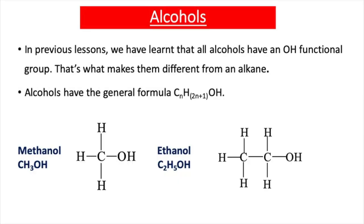In our previous videos, we learnt about alcohols and that alcohols have an OH functional group. A functional group is the part of a molecule that determines its chemical reactions. In an alcohol it's the OH group; in an alkene it's a C double bond C; and in carboxylic acids, which we're going to study in this video lesson, it's a COOH.